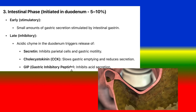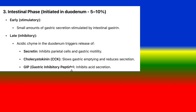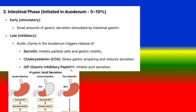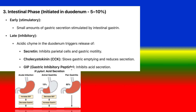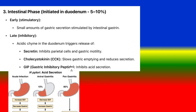3. Intestinal phase — initiated in the duodenum, accounts for 5–10% of secretion. Early stimulatory: small amounts of gastric secretions are stimulated by intestinal gastrin. Late inhibitory: acidic chyme in the duodenum triggers release of secretin, which inhibits parietal cells and gastric motility. Cholecystokinin (CCK) slows gastric emptying and reduces secretion. Gastric inhibitory peptide (GIP) inhibits acid secretion.